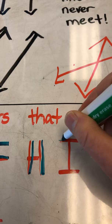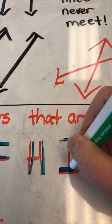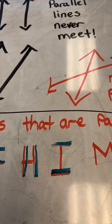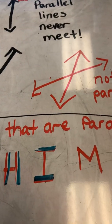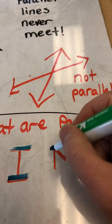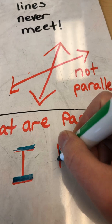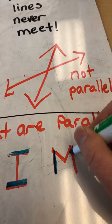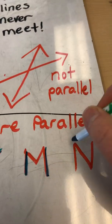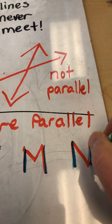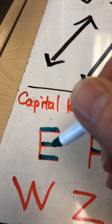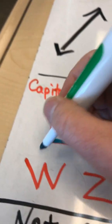The vertical lines are parallel. On the letter M the vertical lines are parallel. On the letter N the vertical lines are parallel. On the W it's the oblique lines.